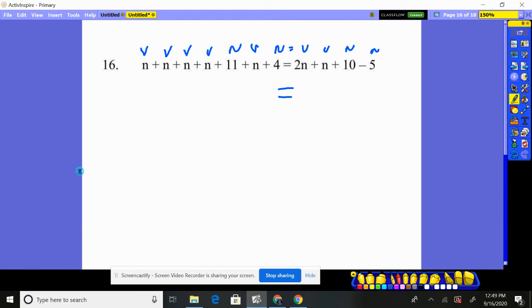So before we start moving anything, we're going to get all our variables together, all our numbers together, and then we'll worry about moving. We're going to combine like terms. We got quite a bit here on the left. I got one n plus another's two, three, four, five. I have five n's plus 11 and four together makes how much?